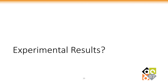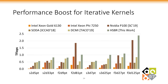Last but not least, let's look at some experimental results. This slide shows the performance boost for iterative stencil kernels. On average, the proposed HSBR algorithm achieves 2.3 times speedup over SODA, while the state-of-the-art work DCMI achieves 1.6 times. Moreover, thanks to the highly customized data paths and fully pipelined microarchitecture, HSBR outperforms a multi-core Xeon Gold CPU by 10.9 times, a many-core Xeon Phi processor by 3.2 times, and a P100 GPU by 1.5 times on average, respectively.